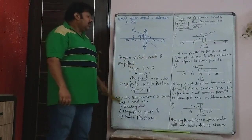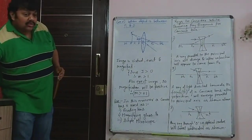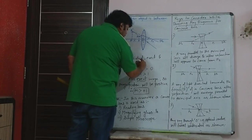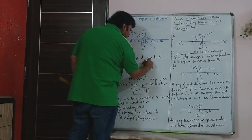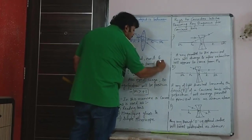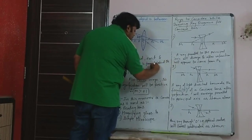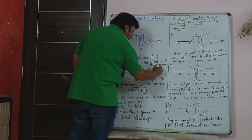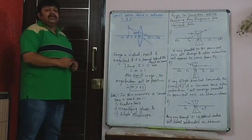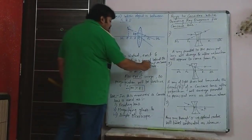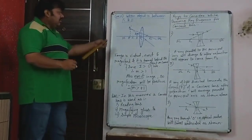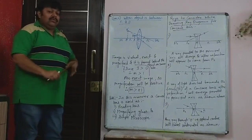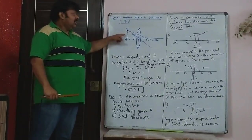The image is virtual, erect, and magnified, and it is formed anywhere behind the object on the same side. The size of the image is greater than the size of the object, so magnification will be more than 1 because the image is magnified.